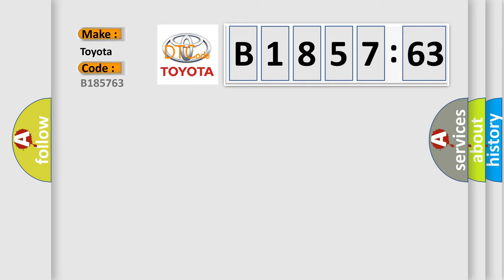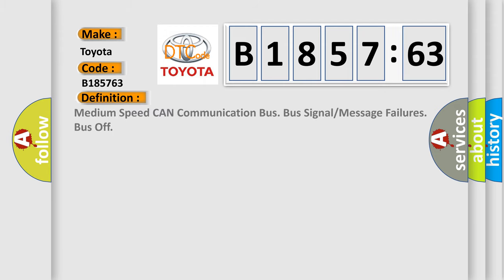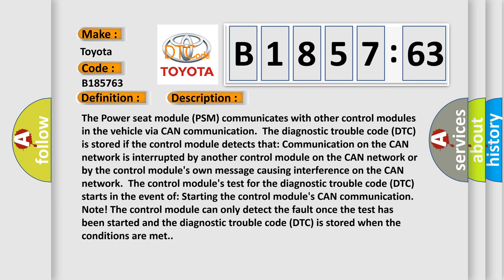So, what does the diagnostic trouble code B185763 interpret specifically for Toyota car manufacturers? The basic definition is medium-speed CAN communication bus signal or message failures bus off.